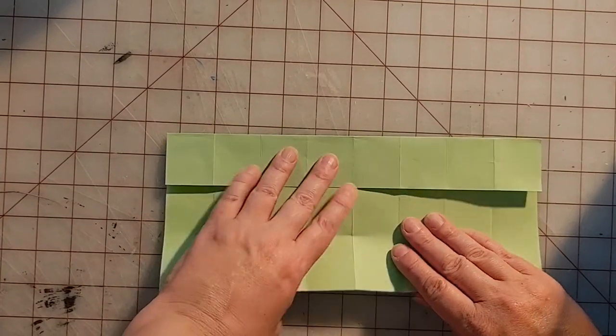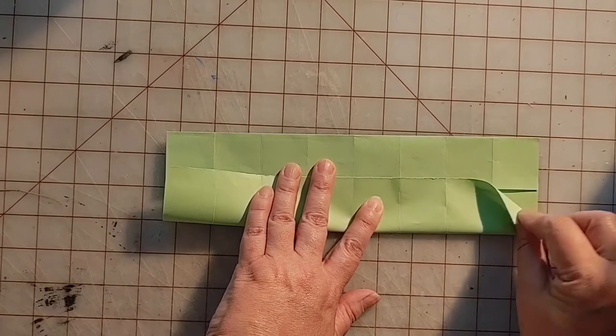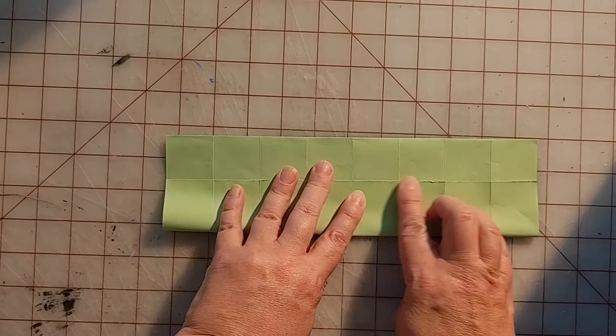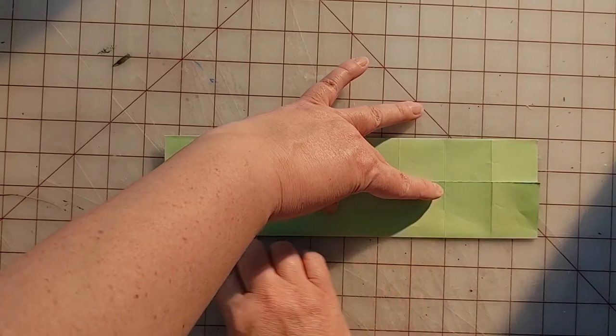So the next thing I'm going to do is fold this edge up so it just slightly overlaps the edge that I just folded, and again I'm going to line up my folds and I'm going to crease out from the middle.